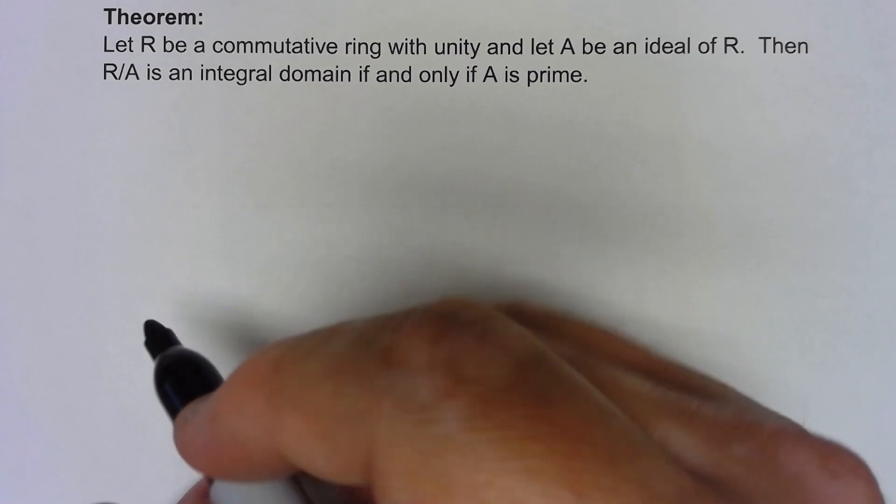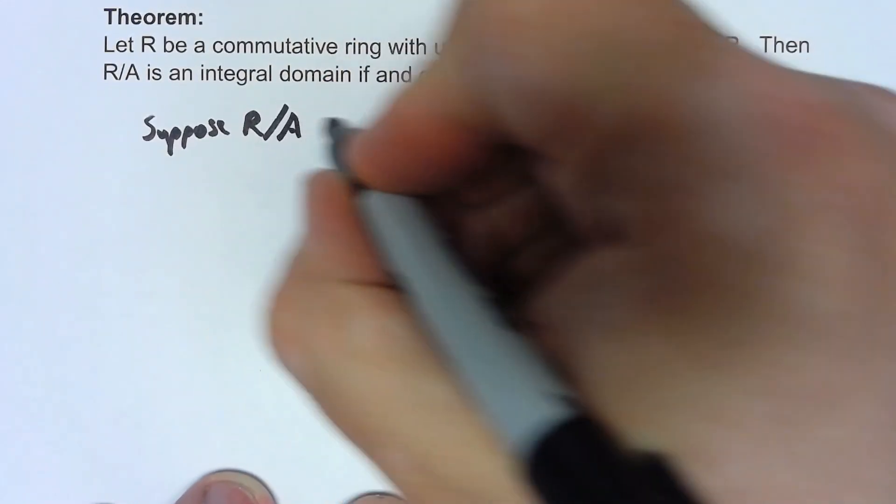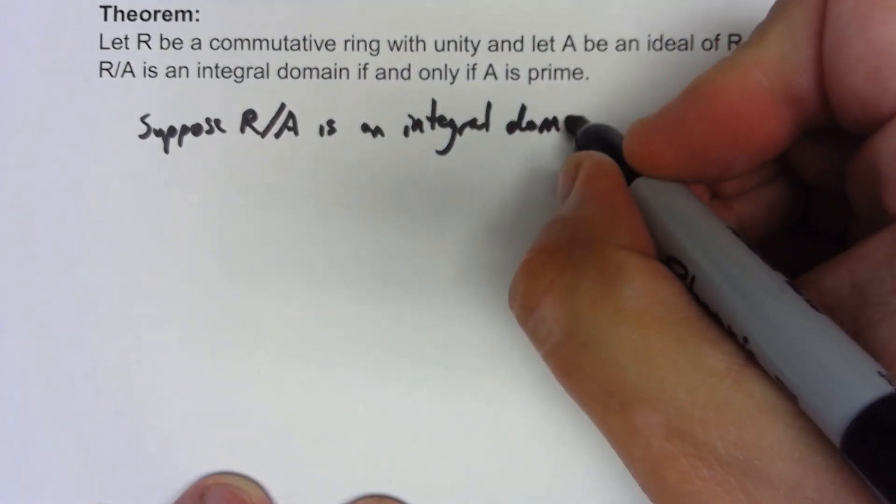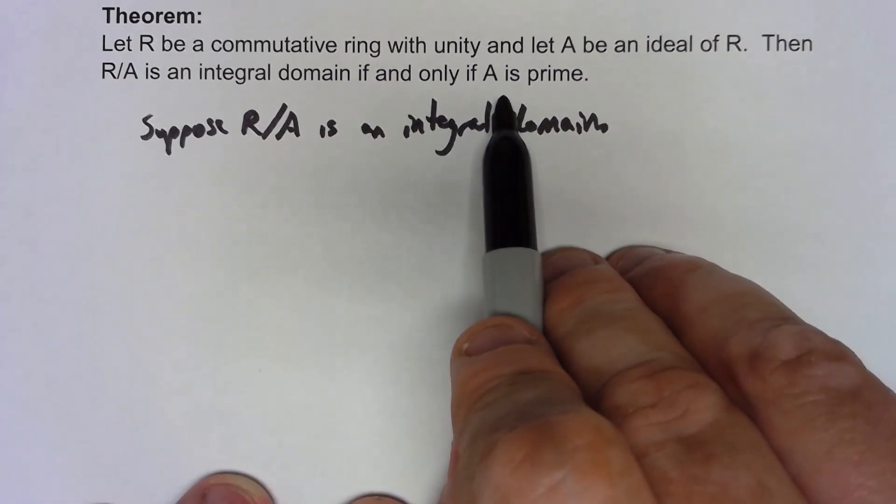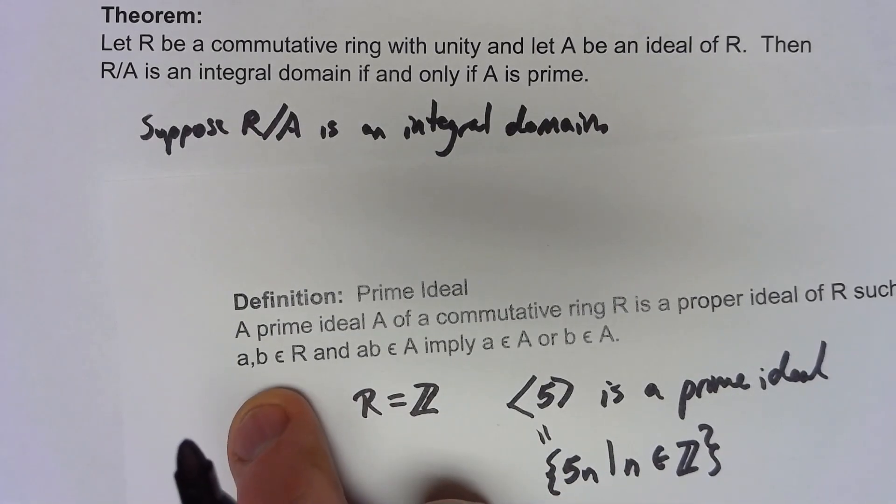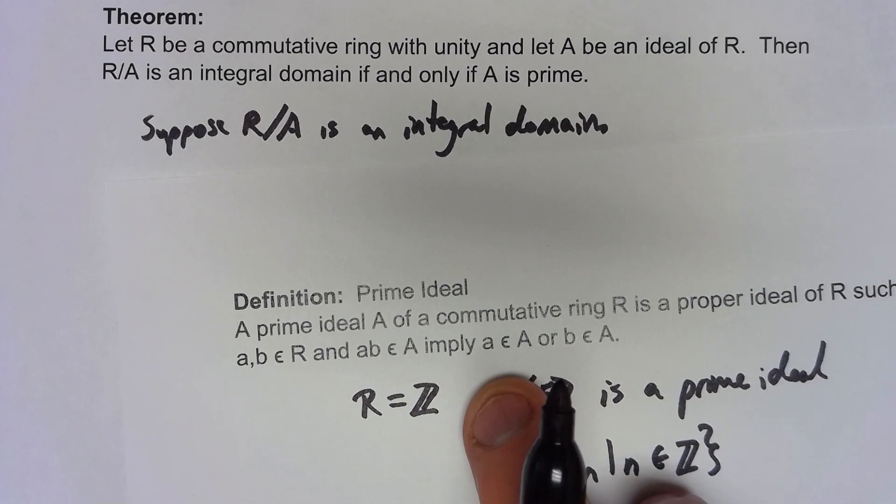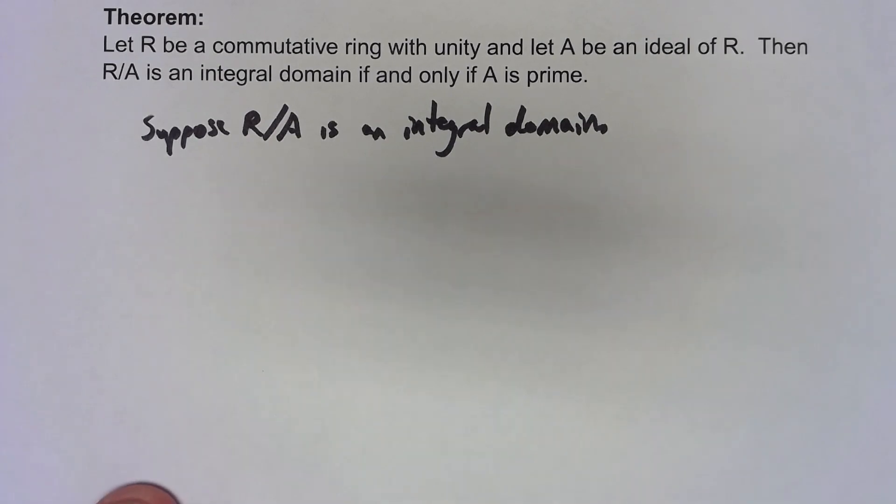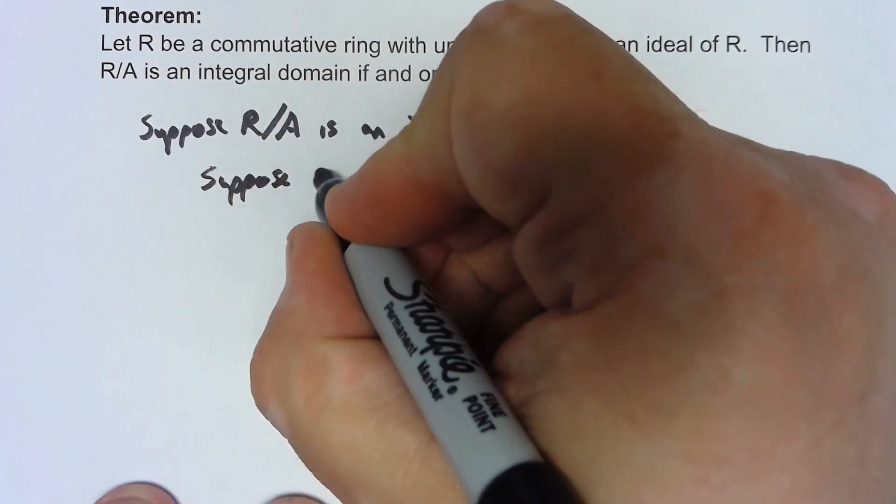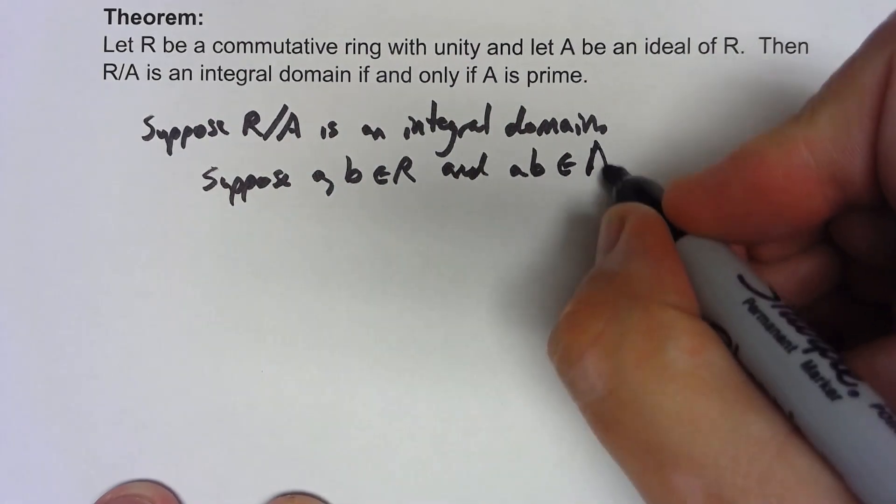So let's start and suppose R/A is an integral domain. We're trying to show that A is a prime ideal. If we go back to our definition of prime ideal, that means that whenever we have two elements of the ring that when we multiply them together end up in that ideal, then one of the two things has to be in the ideal. So let's suppose a and b are in my ring and ab is an element of that ideal A.